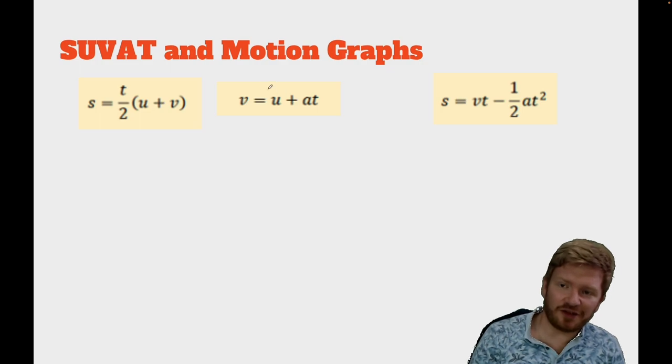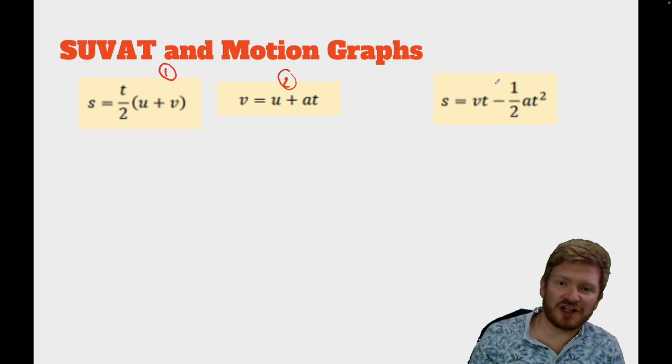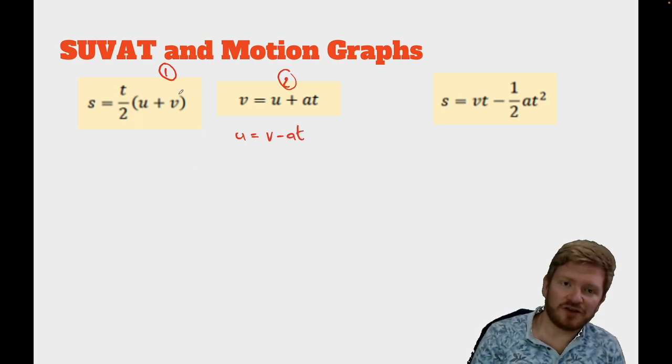With these two equations together, what I can then do is substitute one into the other. So, if I call this equation 1 and this equation 2, what we often want to do is just eliminate something from here. So, if we look at this equation, this has no u in the equation. So, I want to say, is it possible to use equation 2 to get rid of u from equation 1? So, if I just rewrite it, I can say u is equal to v minus a t. So, now I've got a term for u. So, if I go back to equation 1, I can say that is equal to t over 2 multiplied by v minus a t plus v.